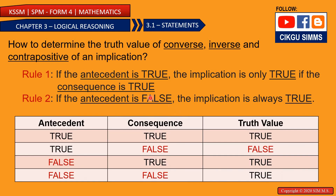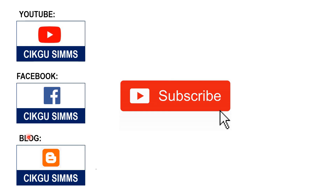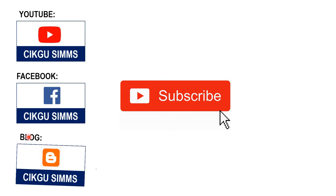In conclusion, I've made a table for you. If the antecedent is false, you don't need to see the consequence because it will always be true. If the antecedent is true, the consequence needs to be true to be true, based on rule number one. If the consequence is false, the truth value will be false. That's the lesson for today. Don't forget to hit the like and subscribe button, and check out the Facebook page and blog for more learning materials. Thanks for watching and see you in the next one.